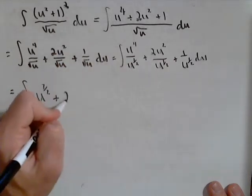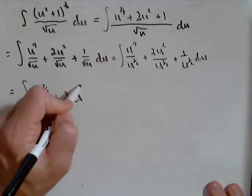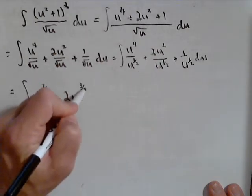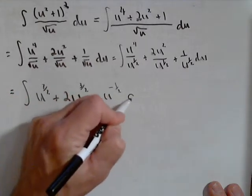Plus two u to the, this is four halves minus a half, so three halves, plus u to the negative one half, du.